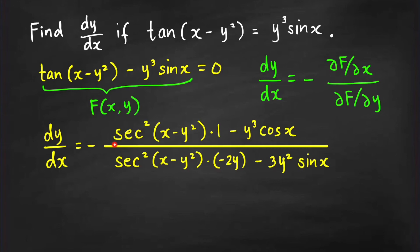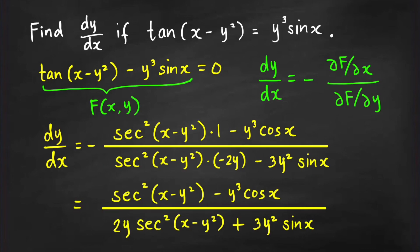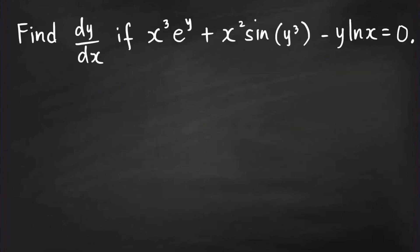Simplifying by distributing the negative sign to the denominator, we get: dy/dx = (sec²(x − y²) − y³cos(x)) / (2y·sec²(x − y²) + 3y²·sin(x)). You may verify this by finding dy/dx the traditional way and checking you get the same expression.